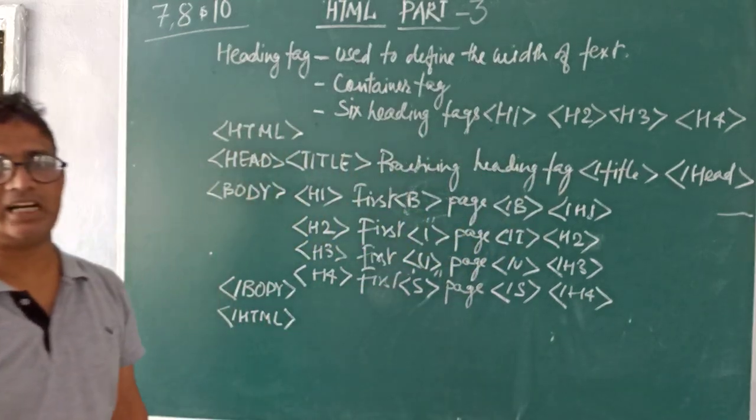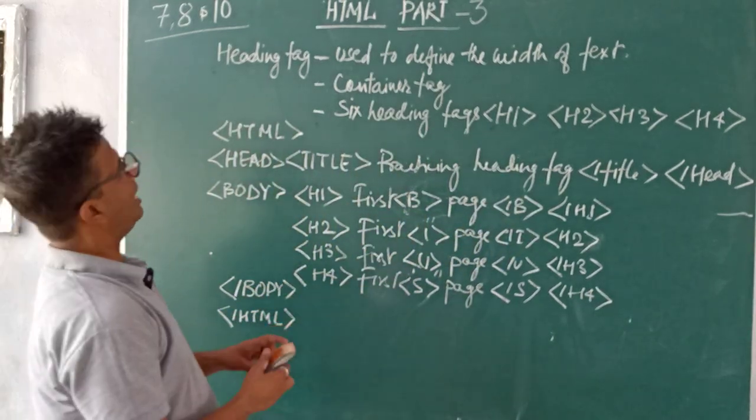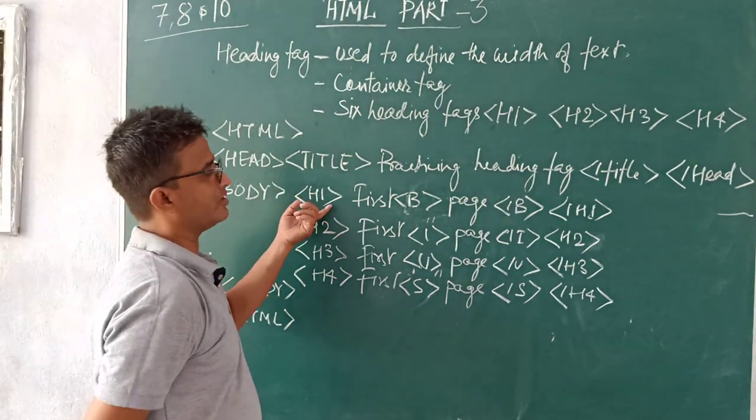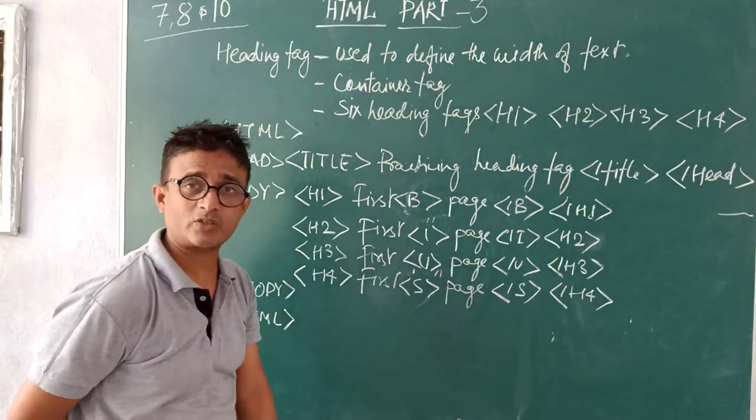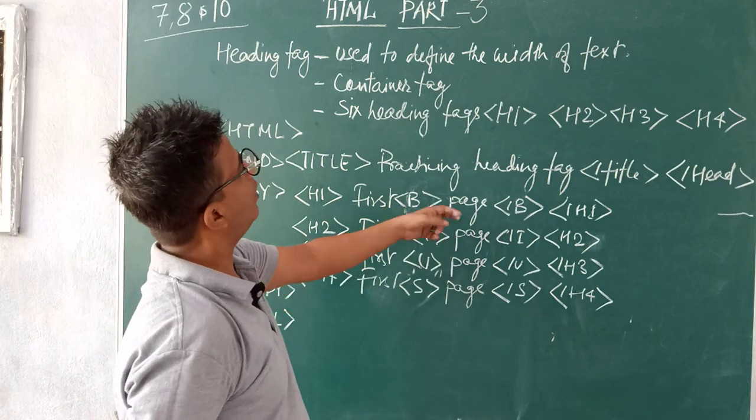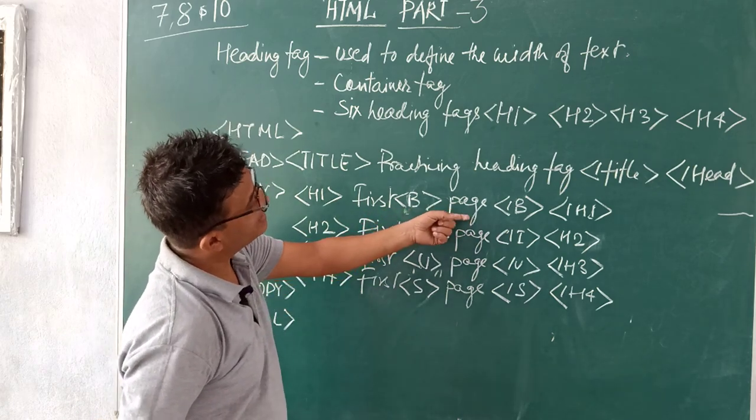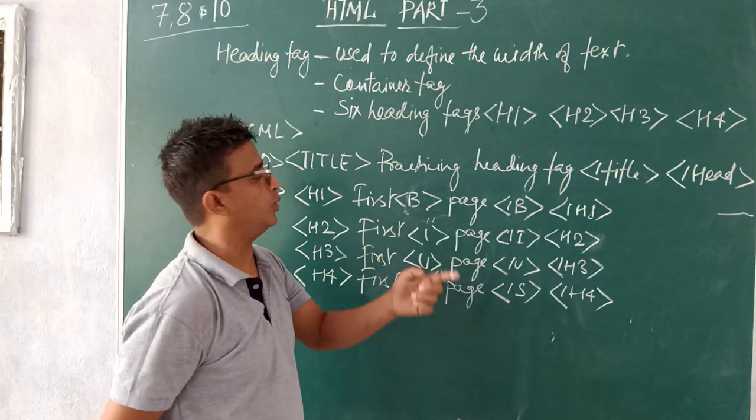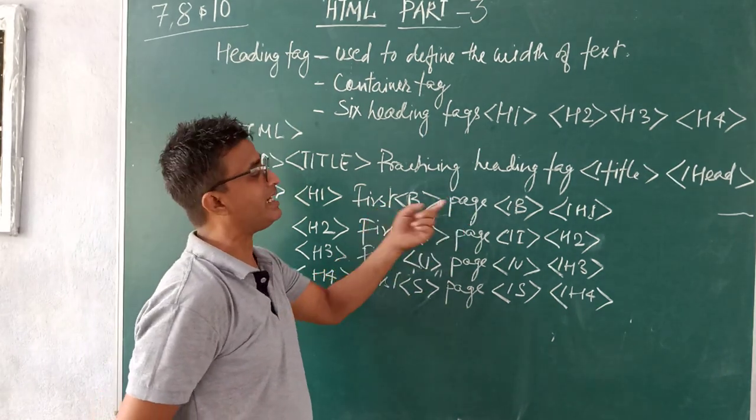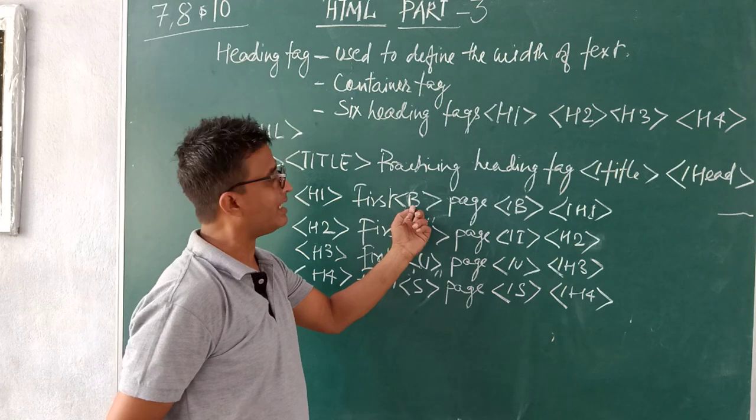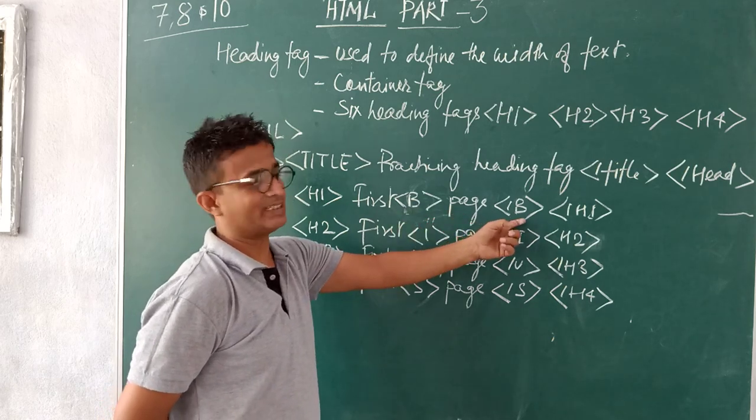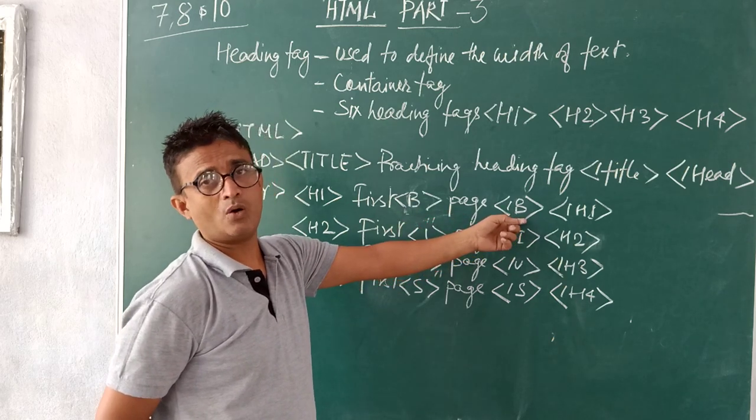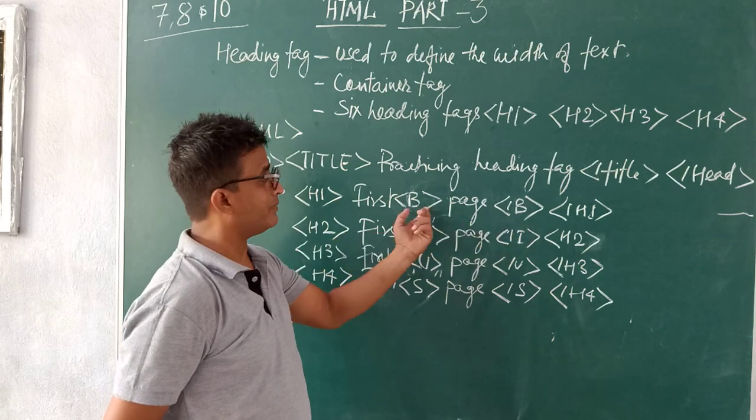Things are ready now. Now how I use in the body? First H1 because I want that text to appear bigger. Then I want this particular text, that is page, to appear bold. So I use here B and opening B in between the text and then the closing B.